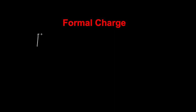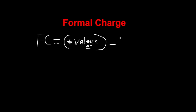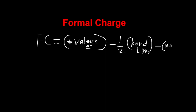For today's video, we'll be calculating the formal charge. To calculate this, there's a formula: formal charge FC equals number of valence electrons minus half of the bond electrons — the bond line — minus the non-bonding electrons, so lone pairs.